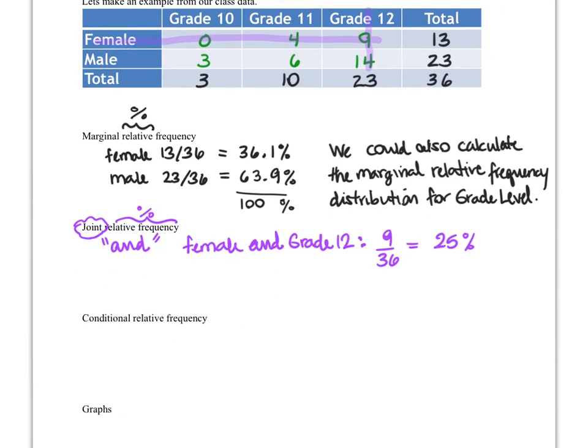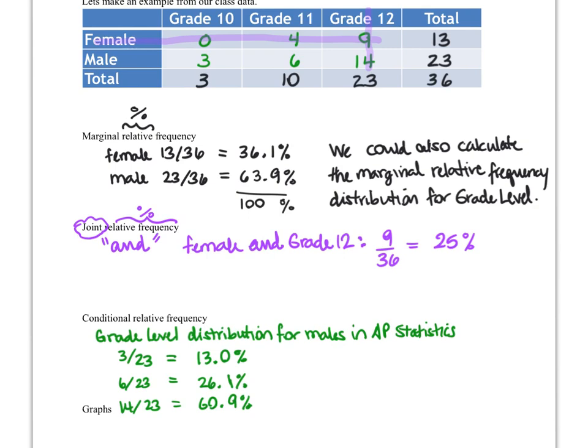When it comes to conditional relative frequency, what we're going to be looking at is just one of the columns or one of the rows and then seeing what the distribution is for that particular row or column. An example of this would be if we decided that we were interested in looking at the distribution of grade level for males. And what that would look like is taking the total of males as our denominator. And this is what the conditional relative frequency distribution would look like. For the total males, 23 in AP statistics, what is the distribution by grade level of the students. And it's going to be 13%, approximately 26%, and approximately 61%.